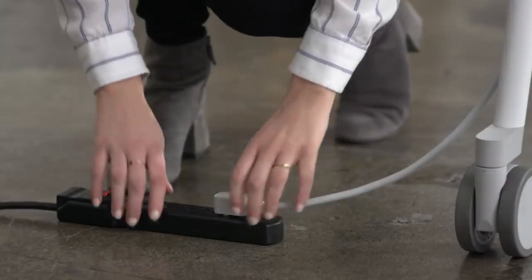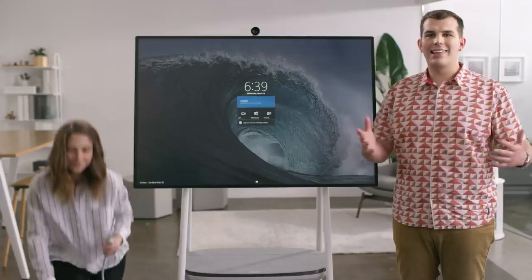That completes the setup of the Steelcase Roam mobile stand and APC charge mobile battery for Surface Hub 2. Now your team can unplug and collaborate anywhere without losing their momentum.